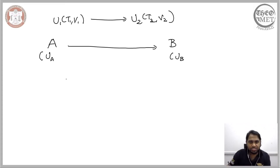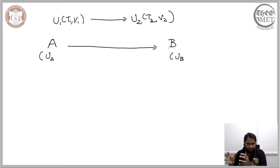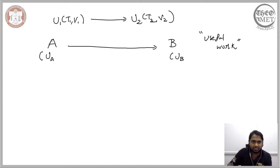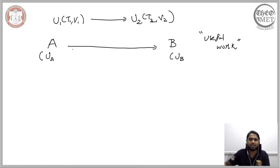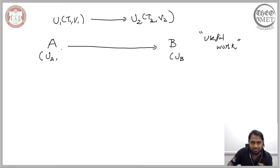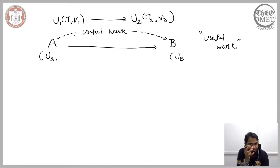When the system changes from state A to state B, let us assume a specific amount of work is done to enable this change. Since our primary interest is the transition of state from A to B, let us refer to the work that enables this transition as useful work. This useful work is what drives the system from state A to state B.